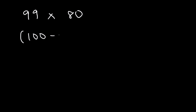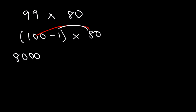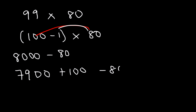What's 99 times 80? Rewrite 99 as 100 minus 1 and multiply by 80. 80 times 100: 8 times 1 is 8, add three zeros — that's 8000. 80 times 1 is 80. So we need 8000 minus 80. Break 8000 into 7900 plus 100. 100 minus 80 is 20. Add 20 to 7900 — that's 7920.